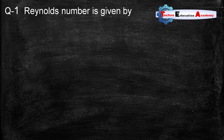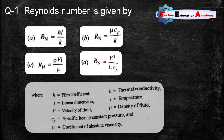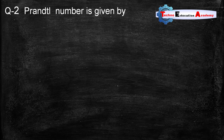Reynolds number is given by: option A, Re = hL/k; option B, Re = μCp/k; option C, Re = ρVL/μ; option D, Re = V² / (T·Cp). According to the value of the Reynolds number we can define which type of flow is there in a fluid — laminar, turbulent, or transient. The equation of Reynolds number is ρVL/μ or ρVD/μ, where ρ is the density, V is the velocity, L is the length, and μ is the coefficient of viscosity. So the correct answer is option C: ρVL/μ.